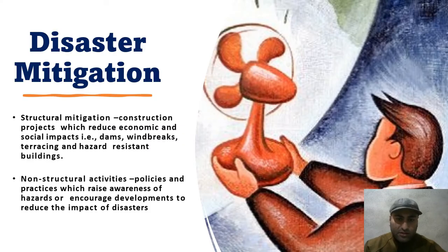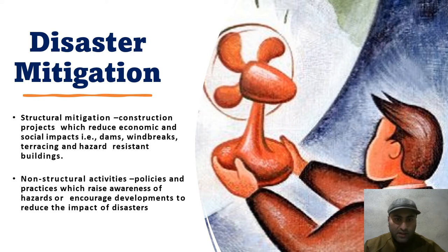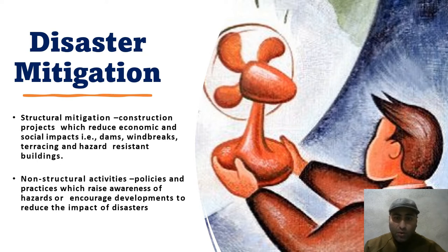There are two kinds of disaster mitigation. First, structural measures — construction projects that reduce economic and social impacts, such as constructing reservoirs and dams to control floods, installing wind breaks, terracing, and building hazard-resistant structures like earthquake-resistant buildings. Second, non-structural measures involve policy, practice, and raising awareness of hazards.